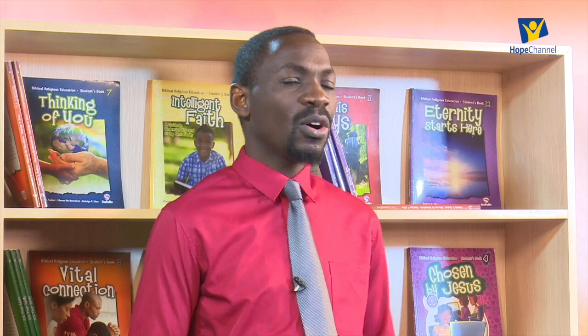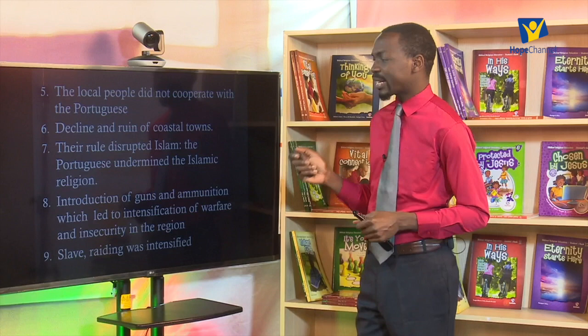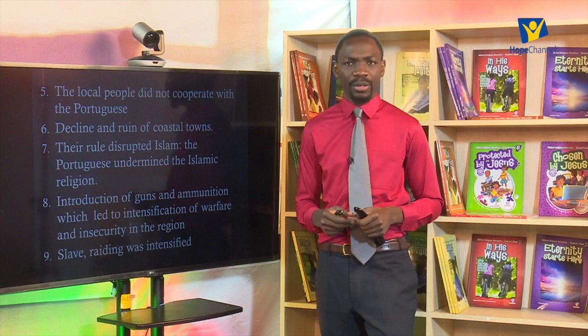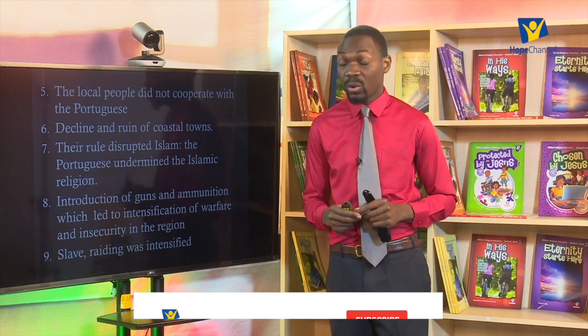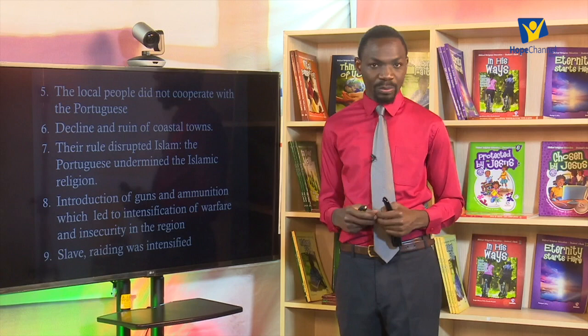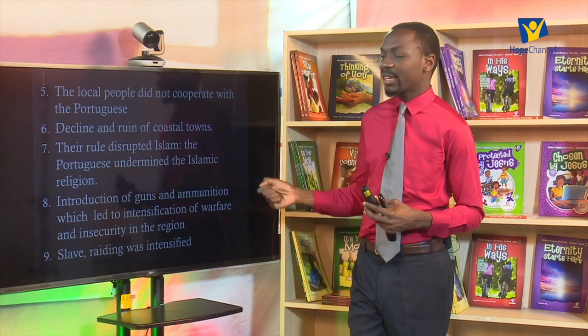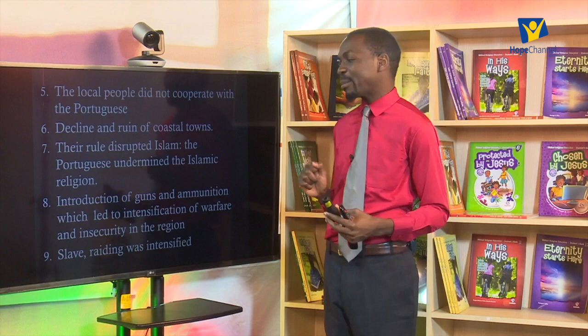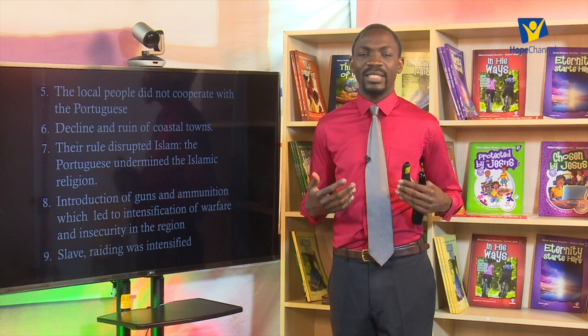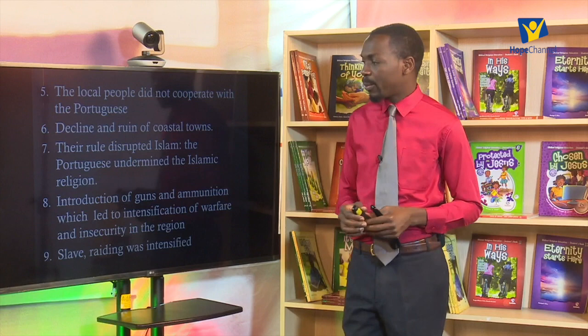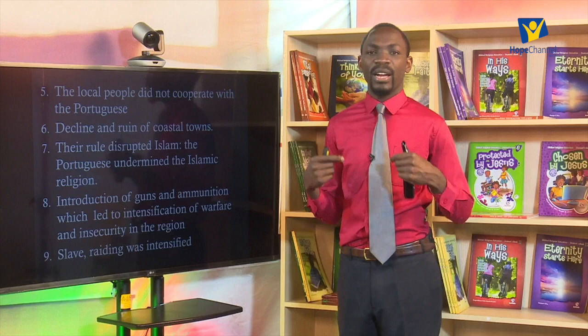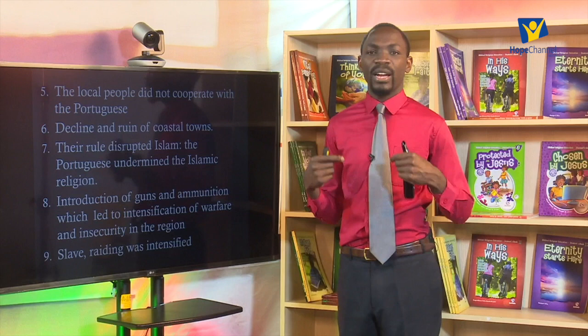Number seven, their rule disrupted Islam. The Portuguese undermined the Islamic religion. As they were trying to establish their rule and administration, they disrupted Islam because one of their motivations for coming was to counter the spread of Islam and instead spread Christianity. So their rule disrupted Islam from spreading further, and they viewed Islam from a negative perspective — which was detrimental to those who had converted to Islam.